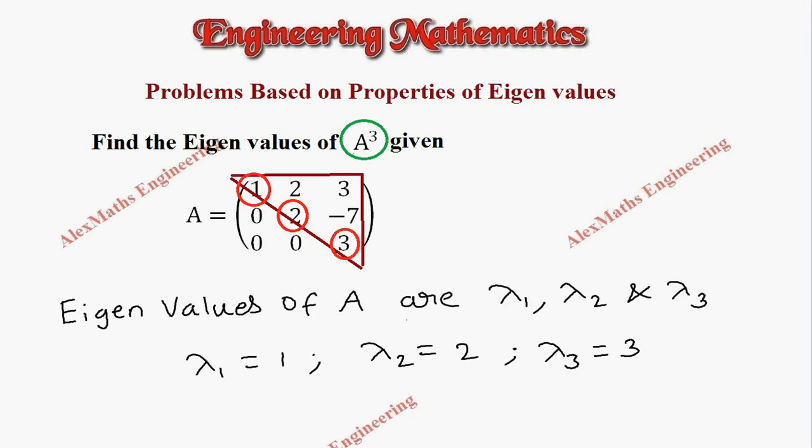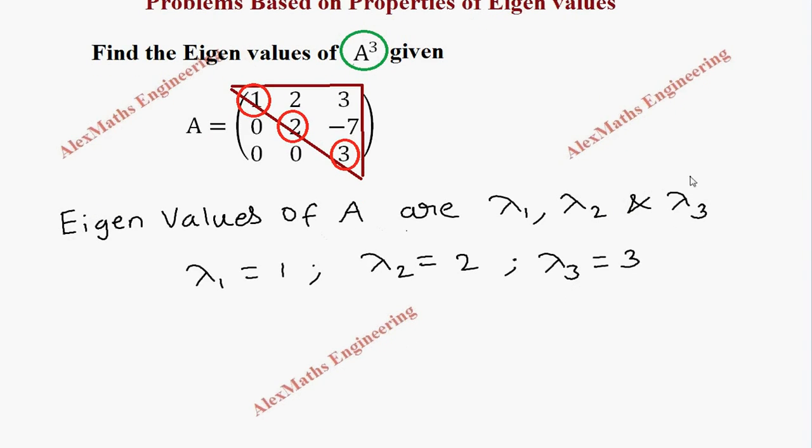Now we need the eigenvalues of the matrix A cubed. As per the property, the eigenvalues of A cubed are lambda 1 cubed, lambda 2 cubed, and lambda 3 cubed.